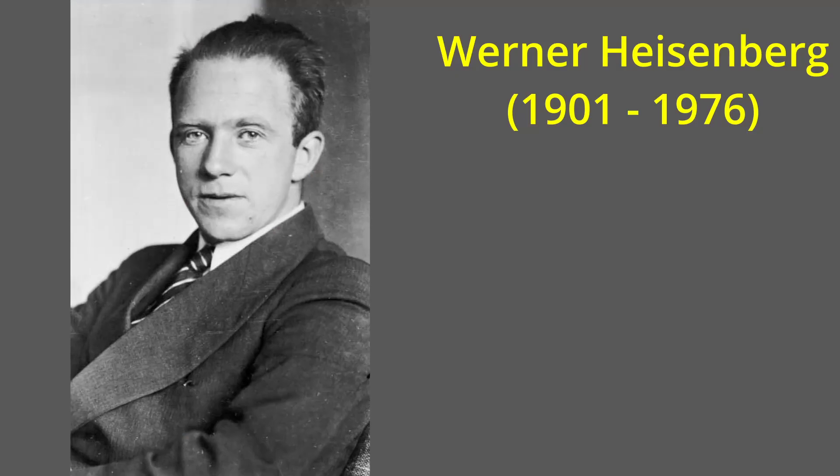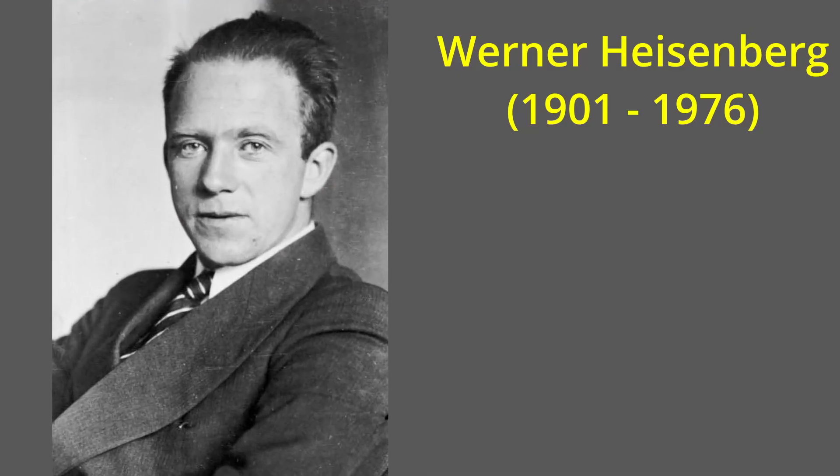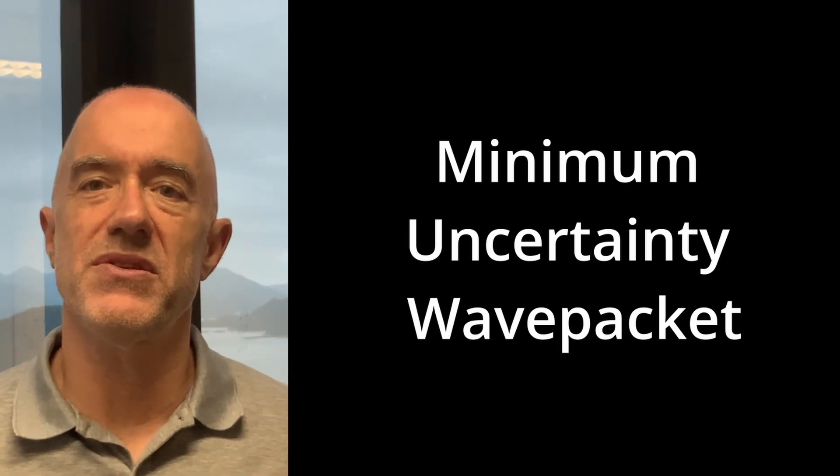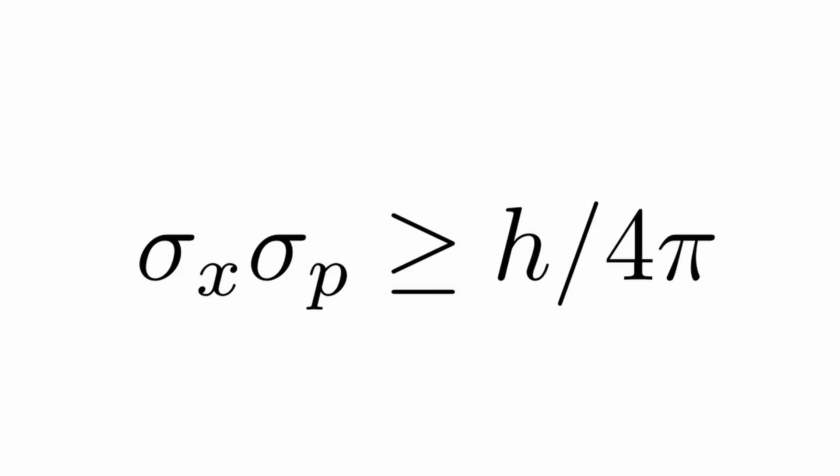To solve the time-dependent Schrödinger equation, we first need to choose an initial wave function. Werner Heisenberg discovered his uncertainty principle in the late 1920s. In quantum mechanics, we can't know simultaneously both the position and momentum of a particle. So we'll construct what's called a minimum uncertainty wave packet where the inequality in the uncertainty principle is replaced by an equality.